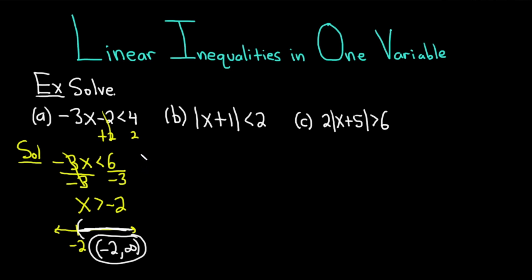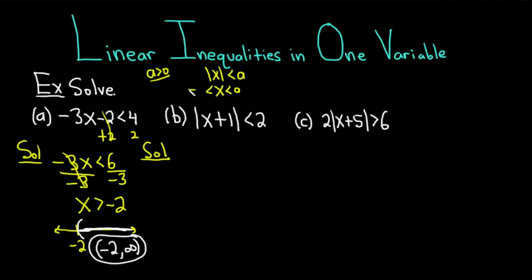Let's do part B. There is a formula you can use: if you have the absolute value of x less than a, where a is a positive number, then you can drop the absolute value and you get negative a less than x less than a. So here we drop the absolute value and get negative 2 less than x plus 1 less than 2.